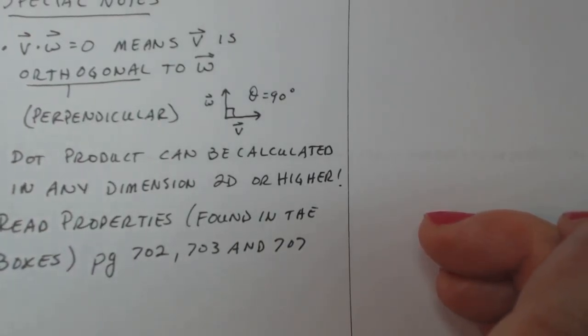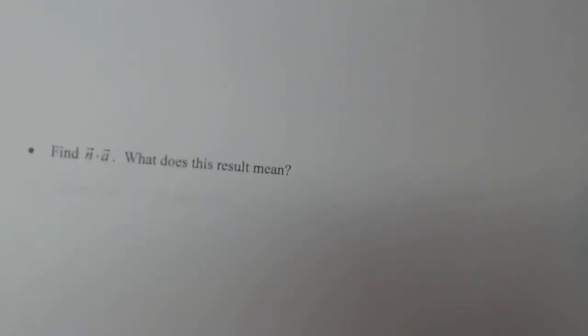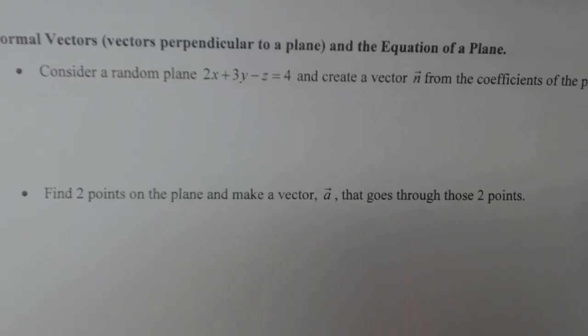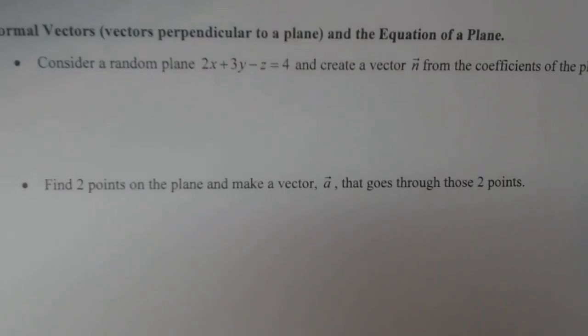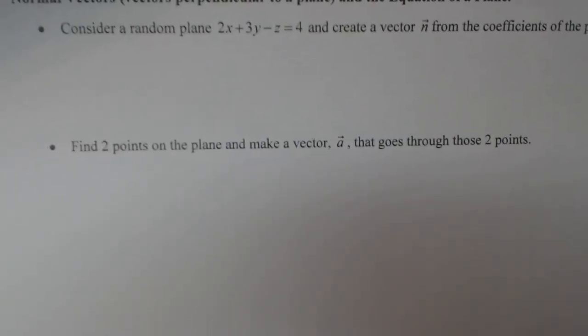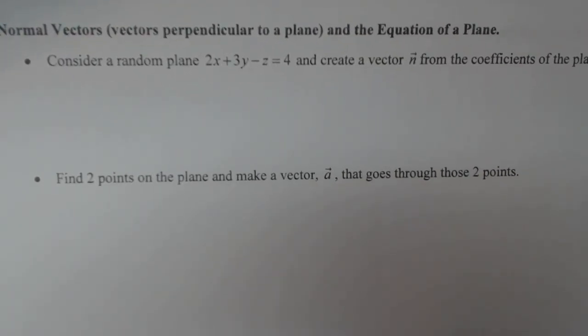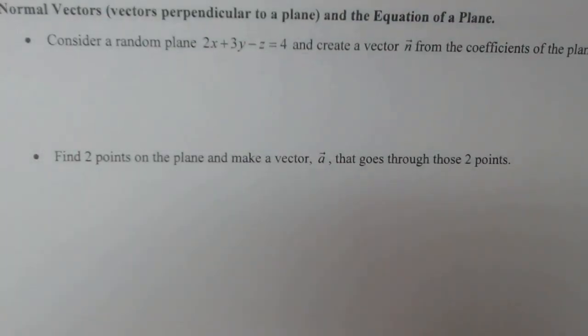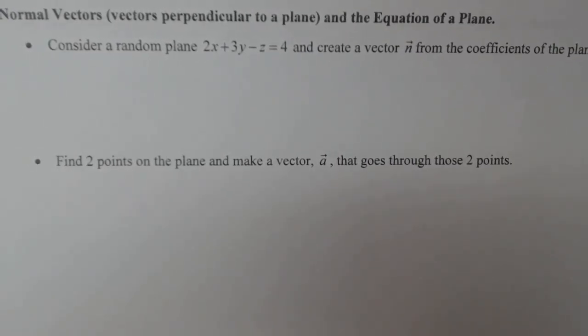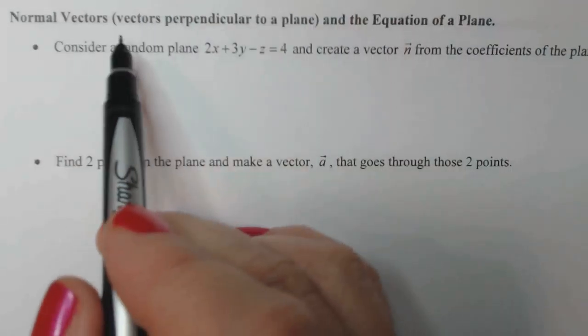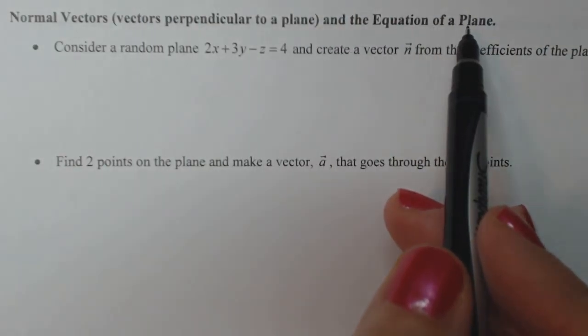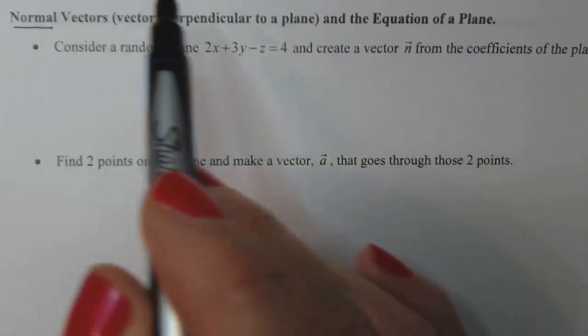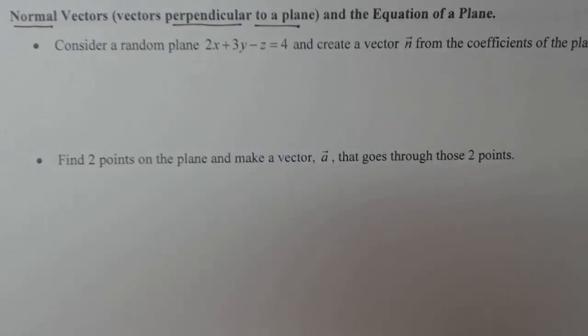Before we go on to cross product, we're going to do the problem on the very top of this next page because it's pretty cool. It's a great result of something that dot product does. So this is about normal vectors, which are vectors perpendicular to a plane, and the equation of a plane. If I say that a vector is normal to a plane, that means that it's perpendicular to a plane. Again, we're switching the vocabulary around, but when you say normal that means perpendicular. This is going to come in really handy in chapter 17.